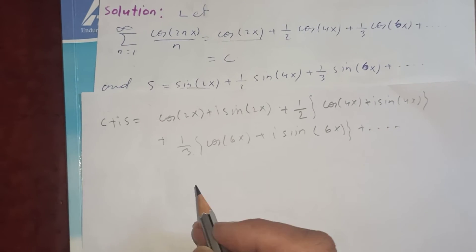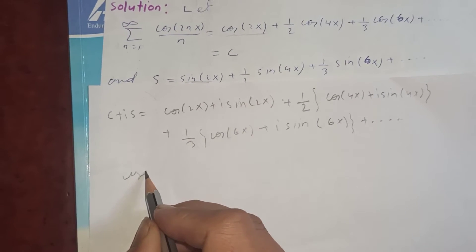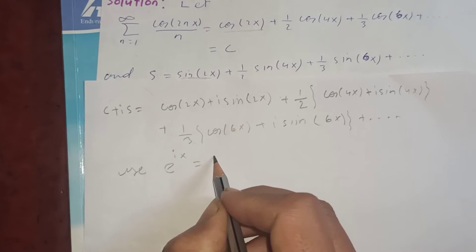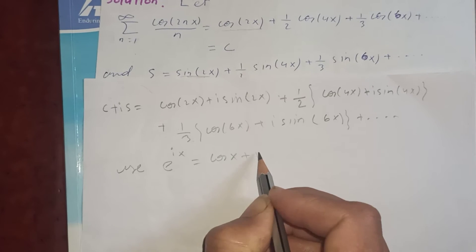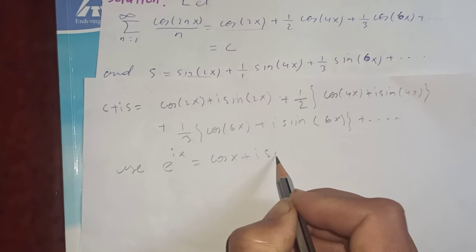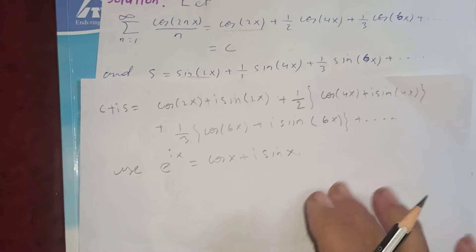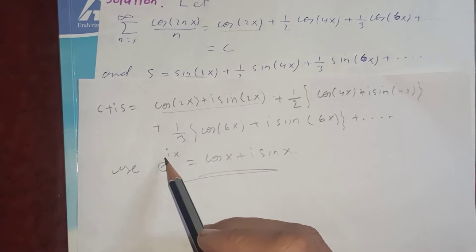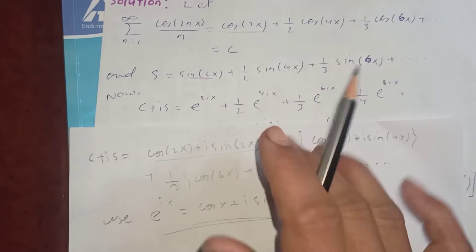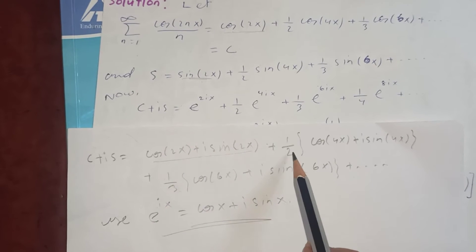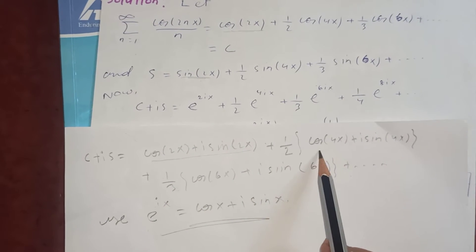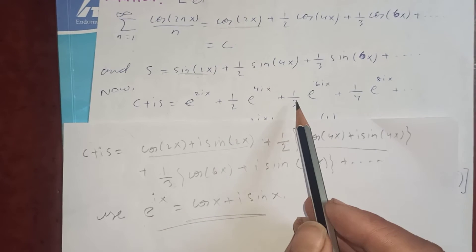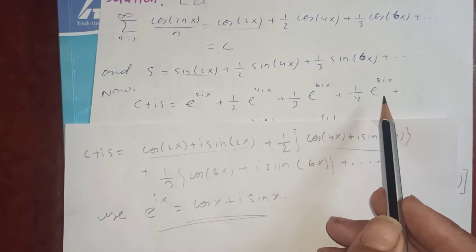Now using Euler's identity, e^(ix) = cos(x) + i·sin(x). Applying this, the first term becomes e^(2ix), then plus one-half e^(2ix) — wait, the second term is one-half e^(4ix), then plus one-third e^(6ix), and so on.